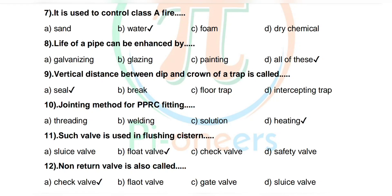Question 8: Life of a pipe can be enhanced by — options: galvanizing, glazing, painting, all of these. Correct answer: all of these. Question 9: Vertical distance between dip and crown of a trap is called — options: vertical seal, break floor, intercepting trap. Correct answer: seal.